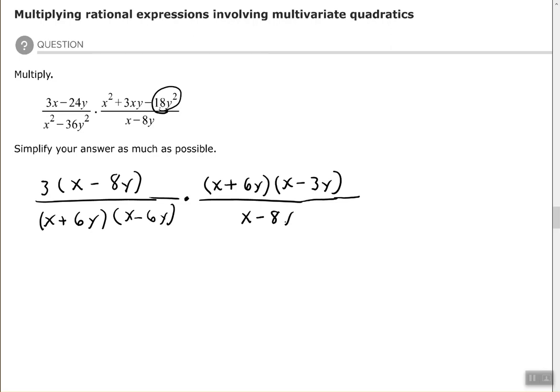So once you have everything factored, the next step is to cancel or simplify. So I have a common factor with the x minus 8y in my numerator and x minus 8y in my denominator.